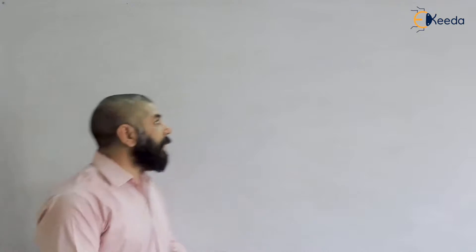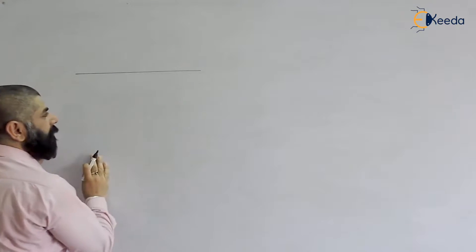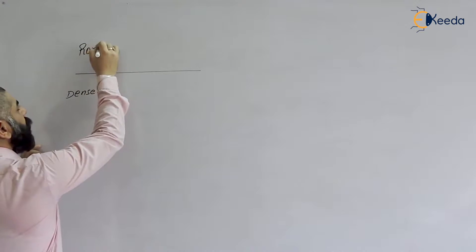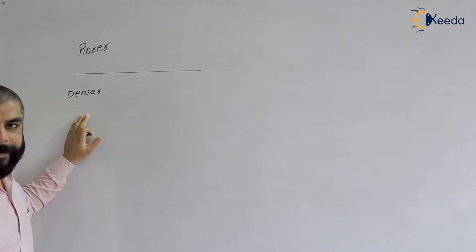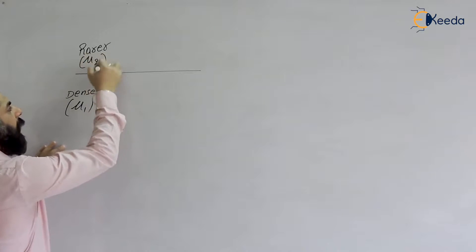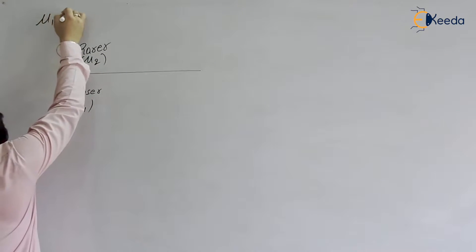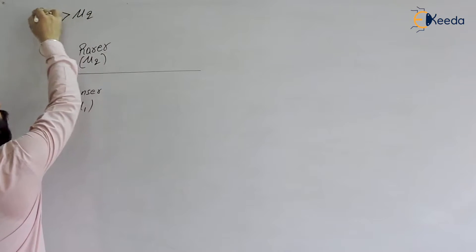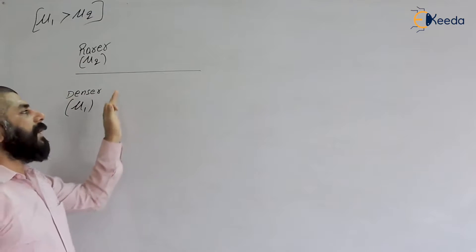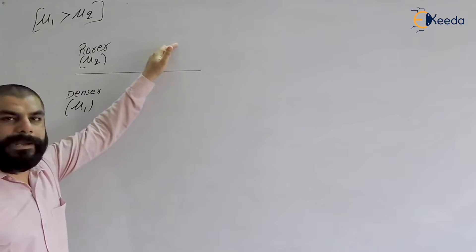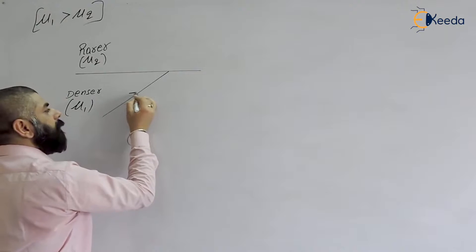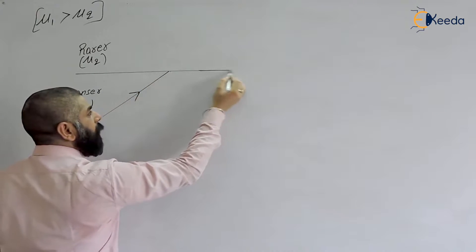If the angle of incidence is such that the angle of refraction is 90 degrees, that angle of incidence is called the critical angle. Here, medium 1 is the denser medium with refractive index mu1, and medium 2 is the rarer medium with refractive index mu2, where mu1 is greater than mu2. When light moves from denser to rarer medium, it bends away from the normal.